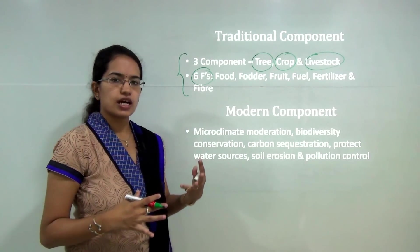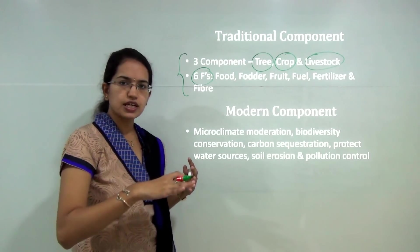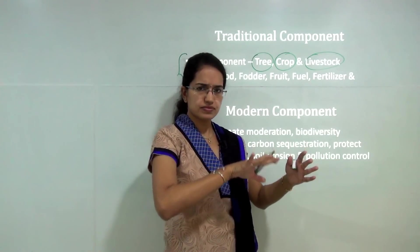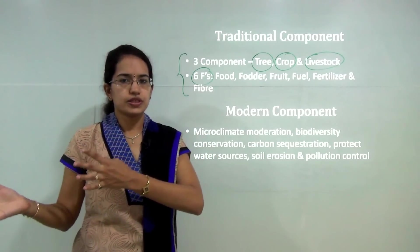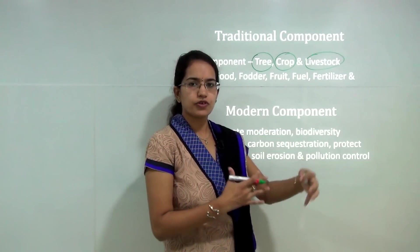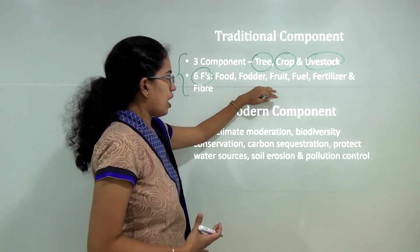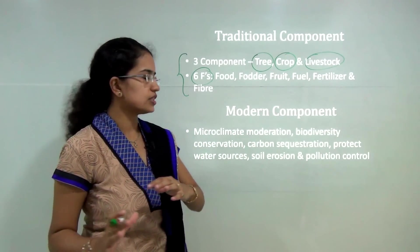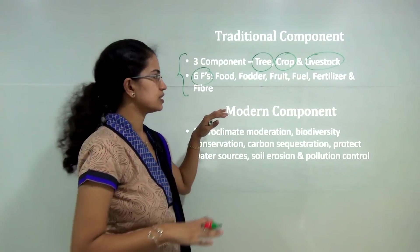Before agroforestry started, we mainly survived on shifting cultivation — working on one field of land, cutting and burning that, then moving to the next field and leaving it barren for a few days so that soil productivity is enhanced. However, shifting cultivation is now confined to the areas of northeast India, as most regions have shifted towards agroforestry.